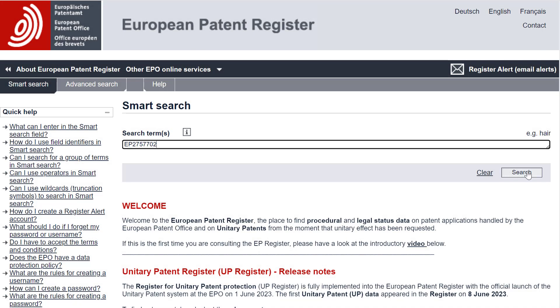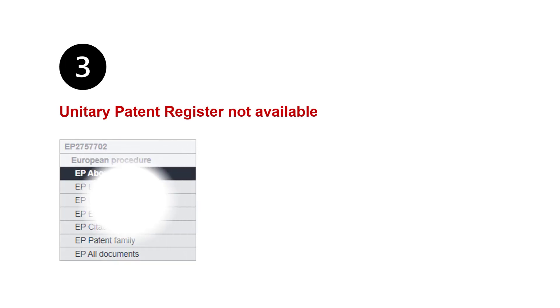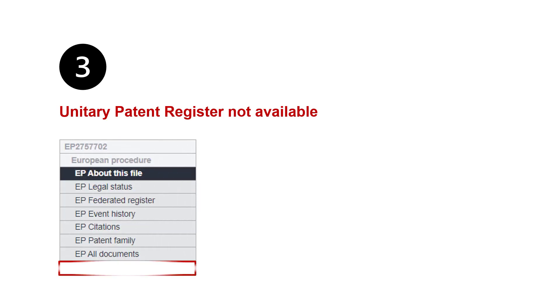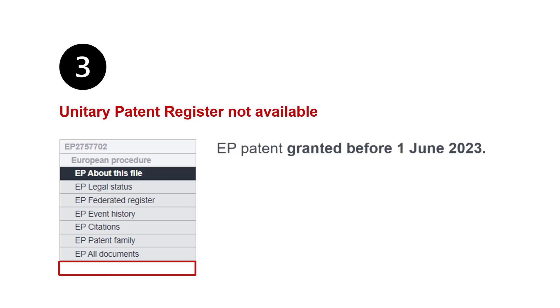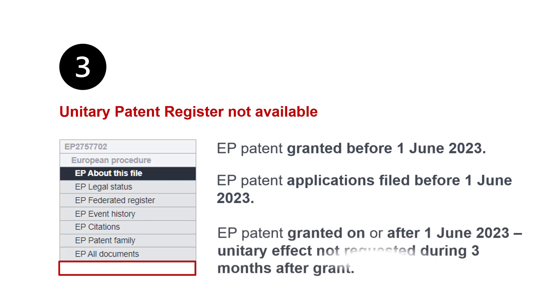Now, let's explore the third and final scenario: when is the Unitary Patent Register not available? The Unitary Patent section is not available for European patents granted before the Unitary Patent legislation was enforced — that is, granted before the 1st of June 2023. This applies to all patent applications filed before that date, too. The same scenario also applies to European patents granted on or after the 1st of June 2023, for which unitary effect was not requested during the first three months after grant.